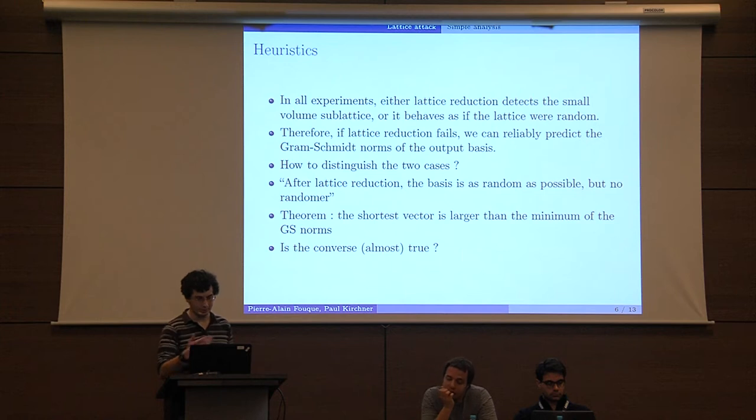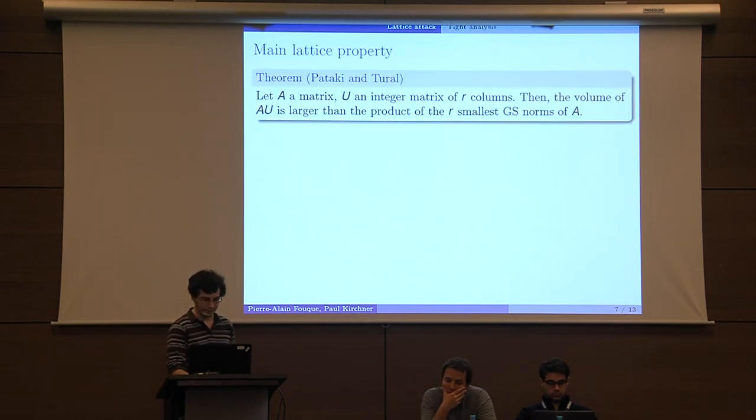This theorem must be followed by the output, so if this is not the case, then we conclude that the lattice reduction fails and therefore we find the secret. But is the converse almost true? The answer is no. We have this main lattice property that we use for our algorithm, and this is due to Pataki and Tural.